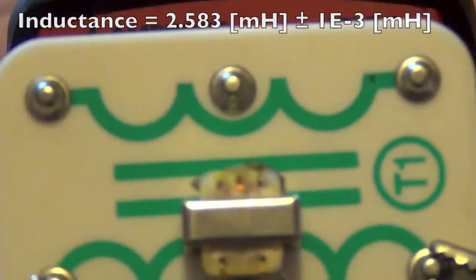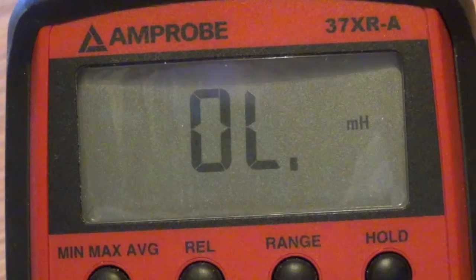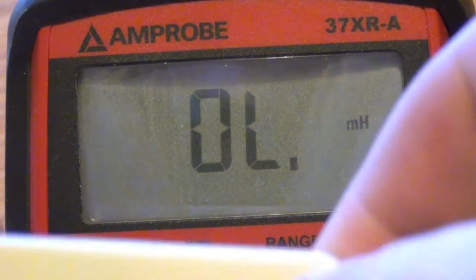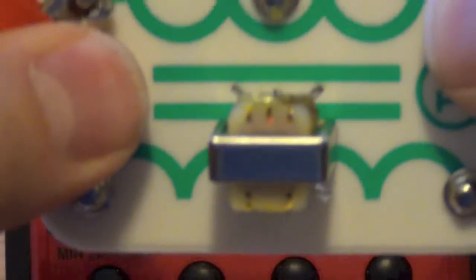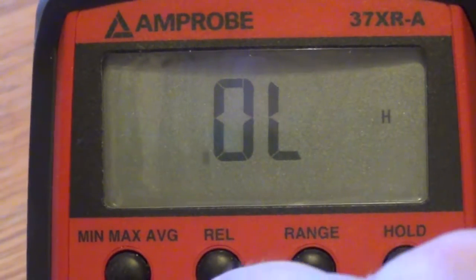Now, if we were to connect the other inductor, so this is the opposite inductor. It's too much inductance. So the second coil has too much inductance for the meter to measure in millihenrys. So we're going to set the selector to the Henrys.